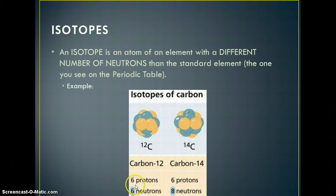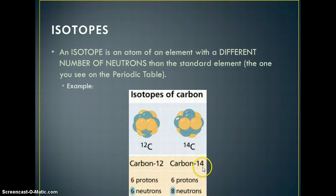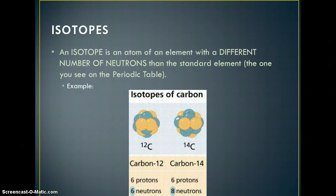This is the standard element you see on the periodic table. An isotope, like carbon-14, is an element with a different number of neutrons. For carbon-14, the mass number is 14, so you take 14 minus 6, which gives you 8 neutrons. That tells you it's an isotope because it has a different number of neutrons than the standard element.